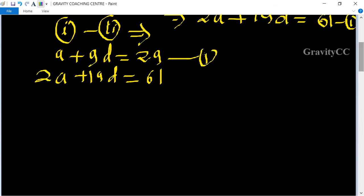Equation 1 minus equation 2. First equation multiply by 2 and second equation multiply by 1. So it will become 2a + 18d = 58.